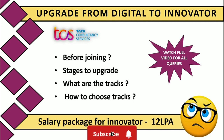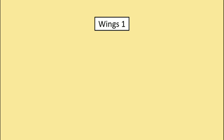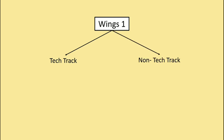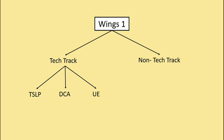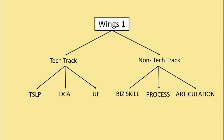The exam for the upgradation process is known as Wings 1 or Elevate Wings. This Wings 1 exam is divided into two categories: one is the Tech Track and the other is the Non-Tech Track. The Tech Track consists of three things — TSLP, DCA, and UE. UE is nothing but external certifications.